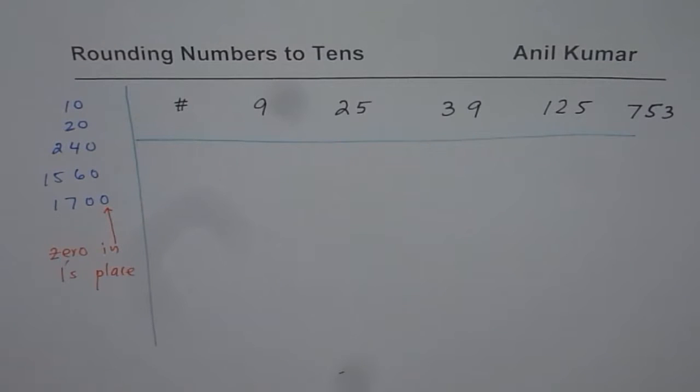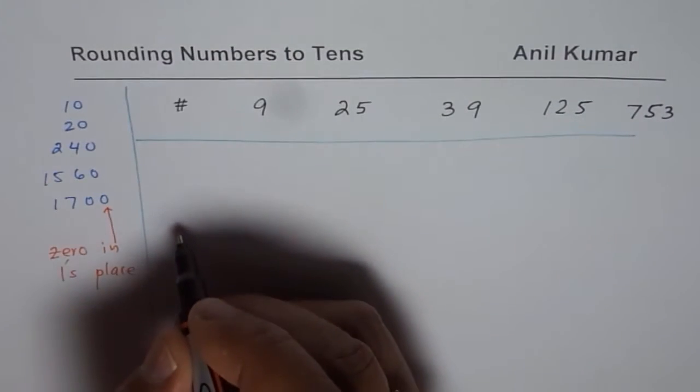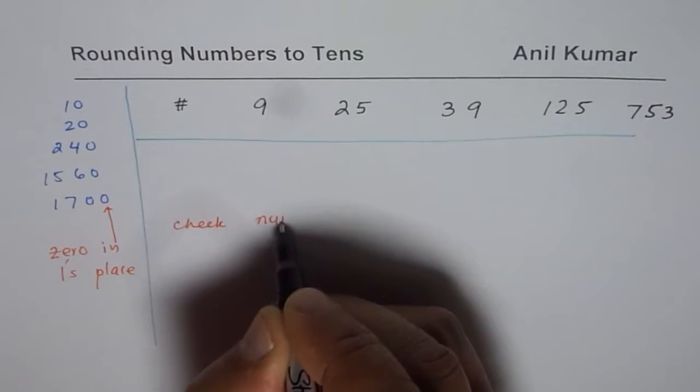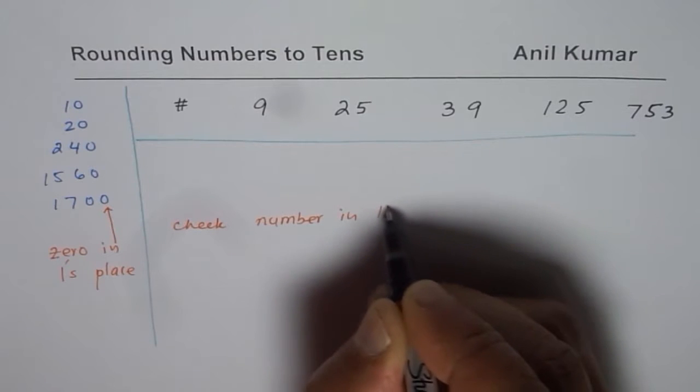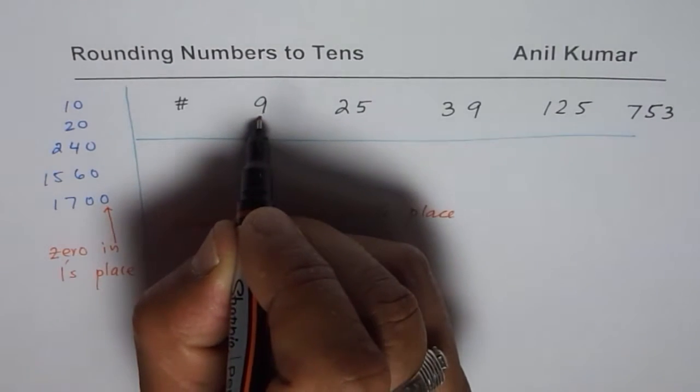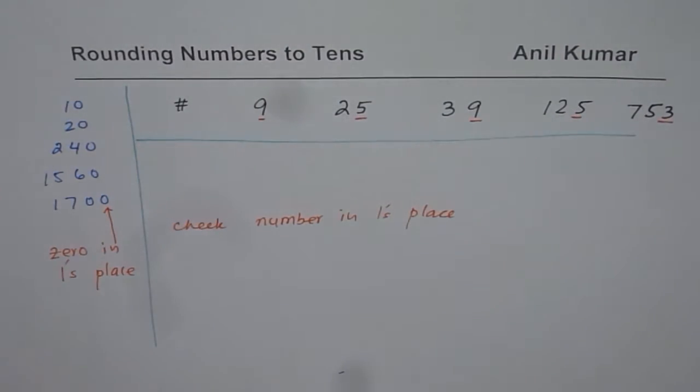Now to round to nearest tens, we should always check the number in one's place. So what do we do here? We check number in one's place. So one's place is in this case 9 itself, 5, 9, 5 and 3. So check number in one's place.